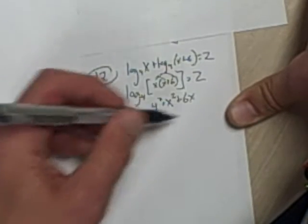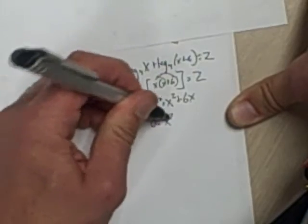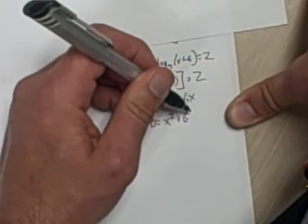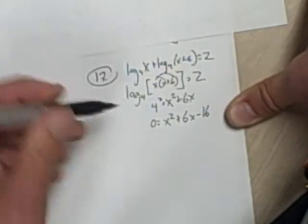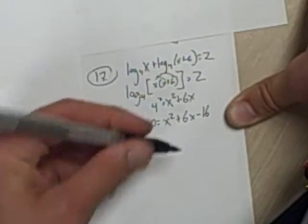4 squared is 16, so subtract that from both sides. Minus 16. Now I have a quadratic, I'm going to factor that.